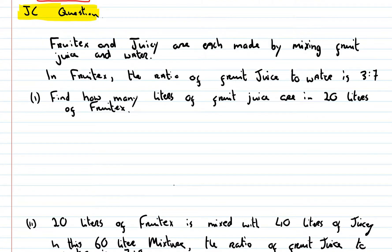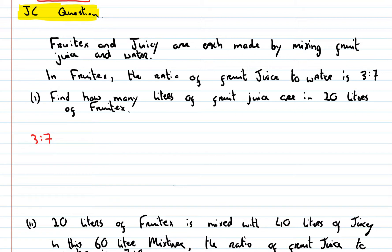Here is a junior cert higher level question. For ordinary level students, concentrate on question 1 — question 2 is probably a little bit too tricky. Frutex and Juicy are each made by mixing fruit juice and water, so it's like a dilute fruit drink. In Frutex, the ratio of fruit juice to water is 3 to 7. That means for every 3 parts of fruit juice, there are 7 parts water — so there's more water than fruit juice. How many litres of fruit juice are in 20 litres of Frutex?